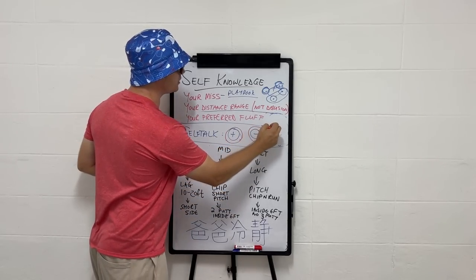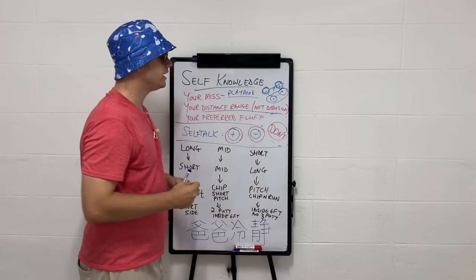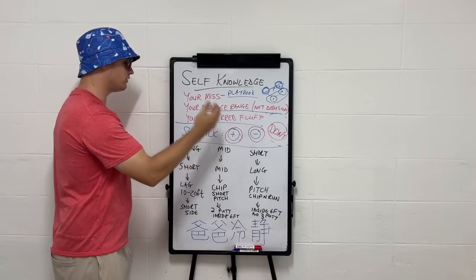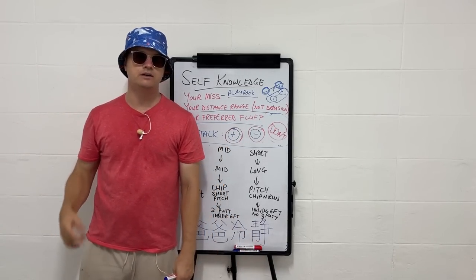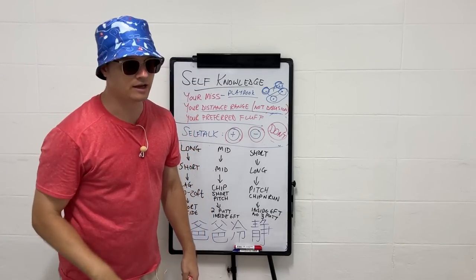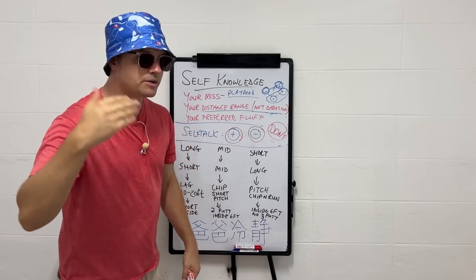Your brain cannot tell the difference between do not and do. The word don't is completely skipped over by your brain. So if you're standing on the tee or your approach shot and you're saying, don't go in that left hand bunker, your brain hears go in that left hand bunker. Don't be short. Your brain hears be short.